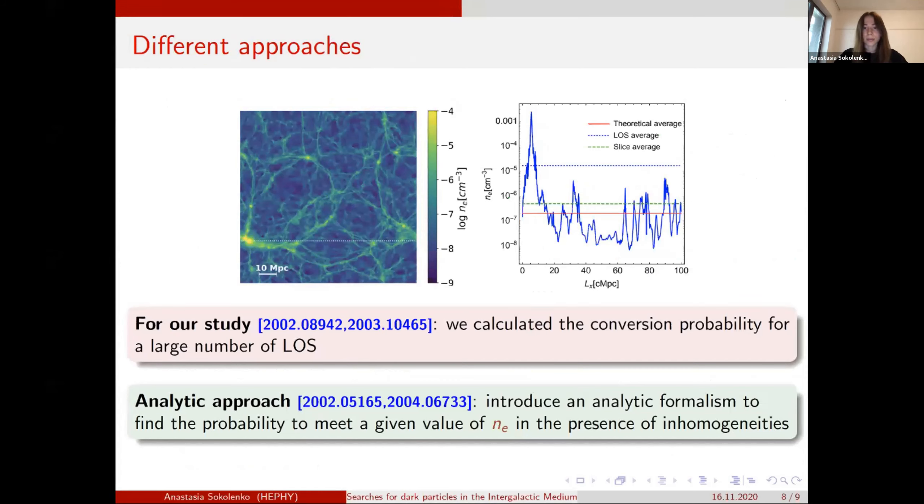And there are two possible approaches that were done more or less at the same time. So from our side, our group used the EAGLE simulations. And from these simulations, we constructed many line of sights and then worked with this data. And another group, instead of taking simulations, they use an analytic formula that took into account all the inhomogeneities and then used small redshift.